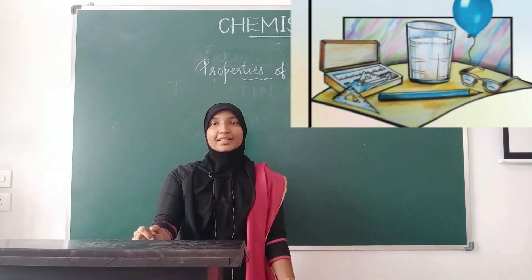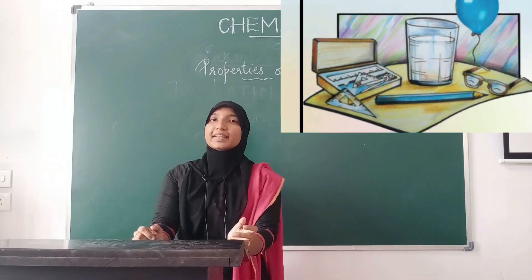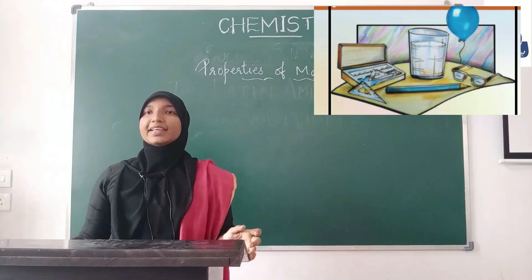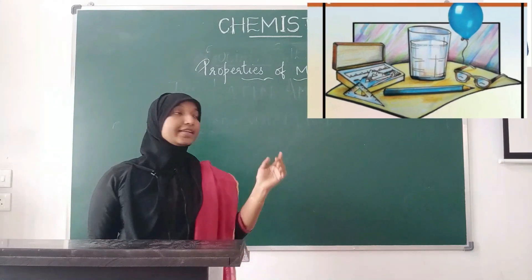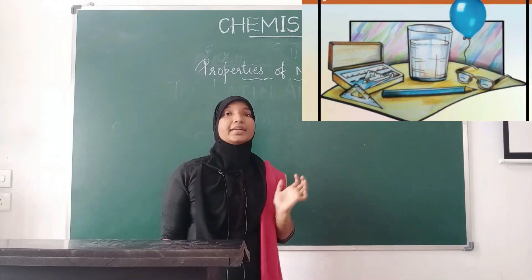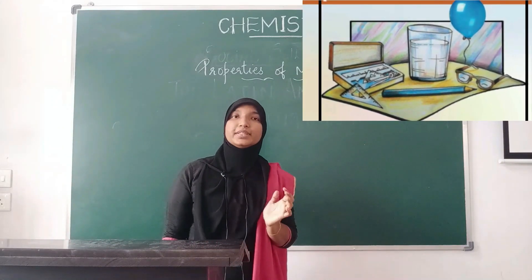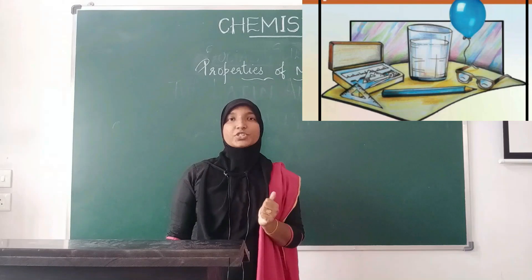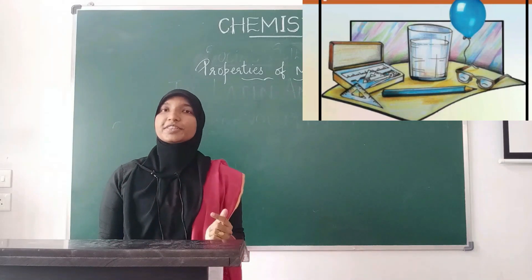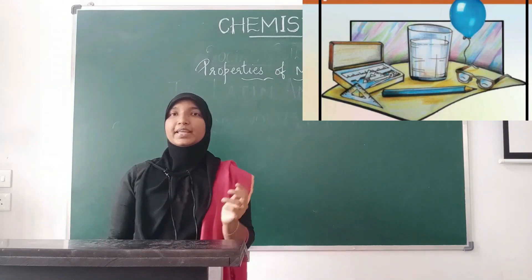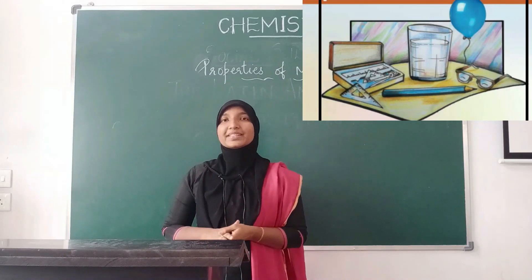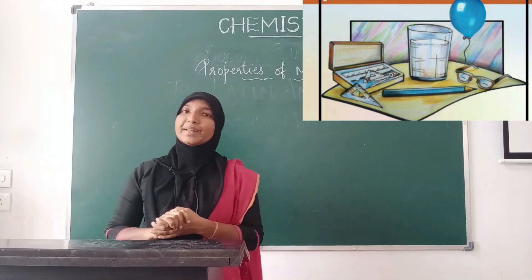What are the objects that you see in that picture? We have an instrument, a glass beaker with water, a balloon with air, a spectacle, and a pencil.